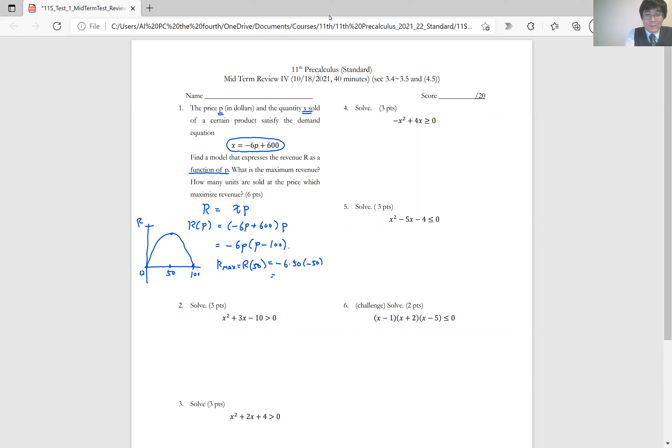So it's going to be 15,000. So the maximum revenue is $15,000. The max revenue is $15,000.